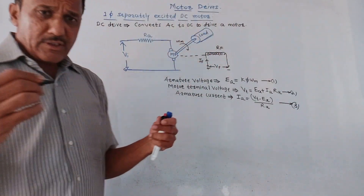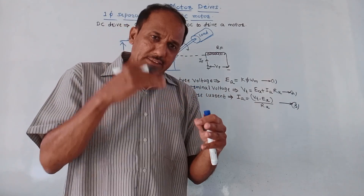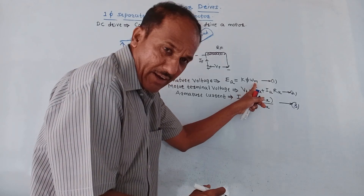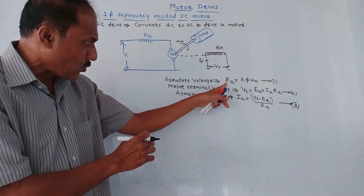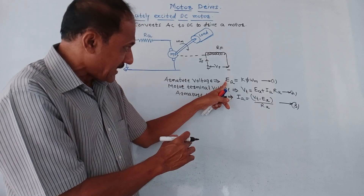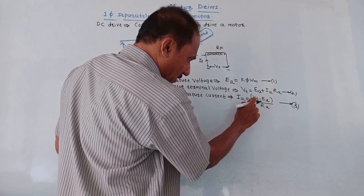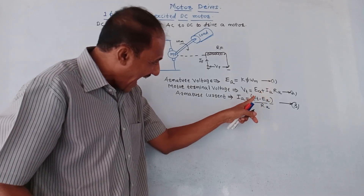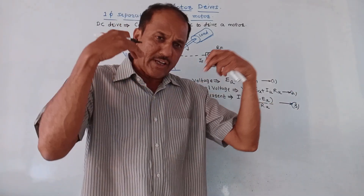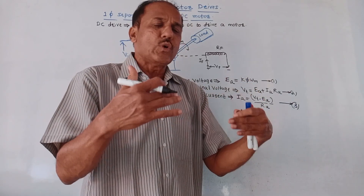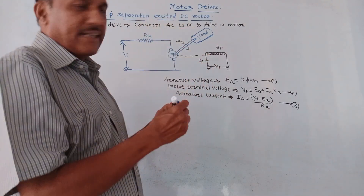If the load increases in this motor, due to the increase in load, the speed of the motor gets reduced — meaning ΩM reduces. Once ΩM is reduced, according to equation one, the value of armature voltage EA gets reduced. Since EA is reduced, observe equation three: VT minus EA means this value is getting reduced, so IA increases. This increase in armature current develops the required torque and achieves the required speed. This is how the single-phase separately excited DC motor works.